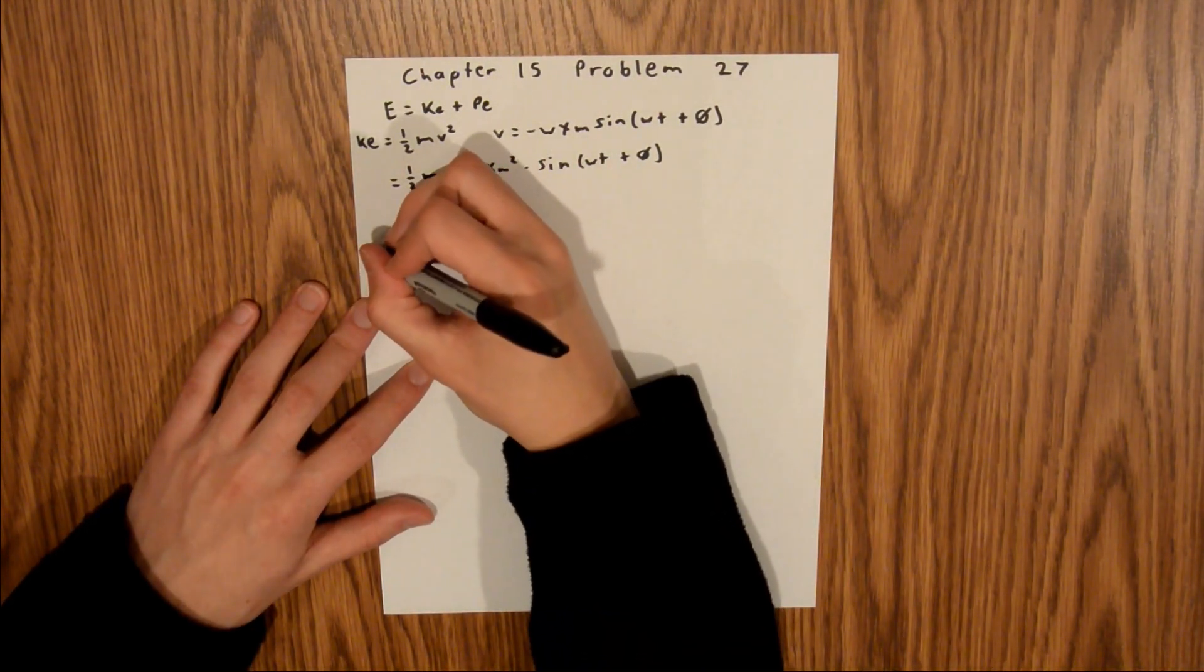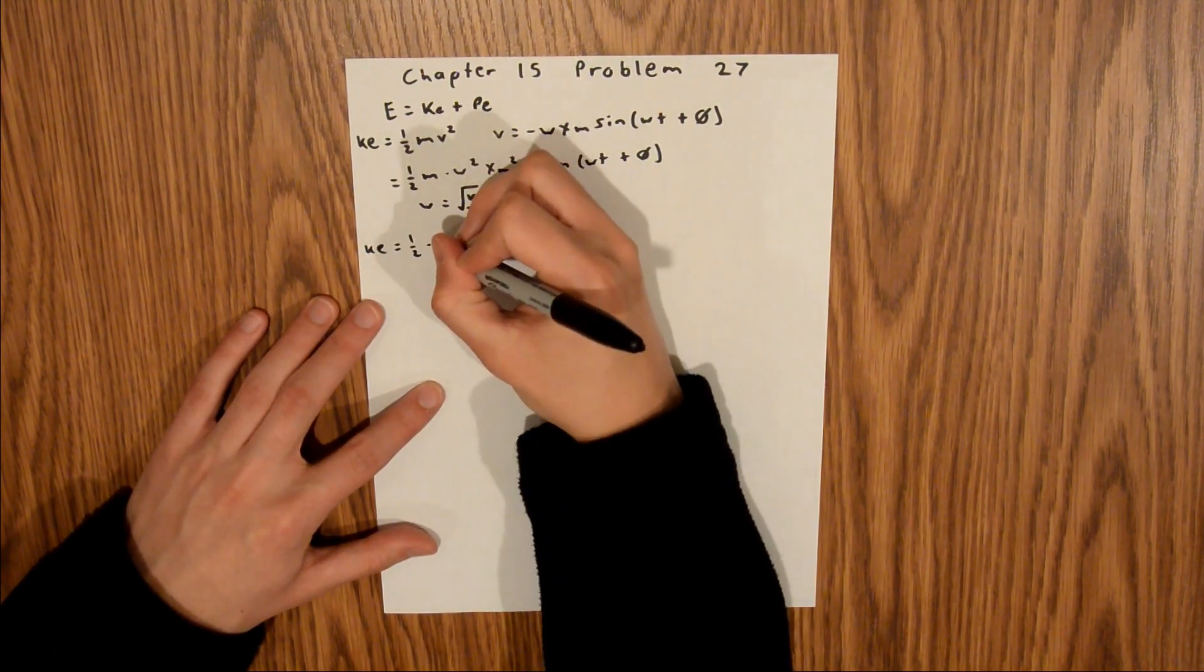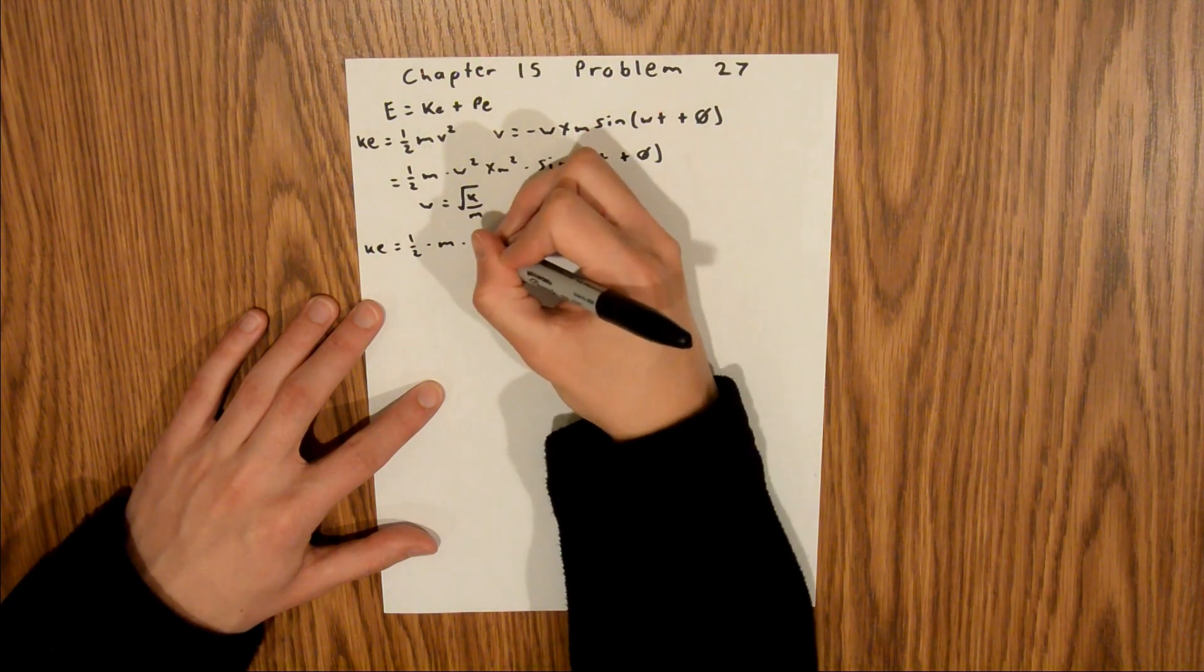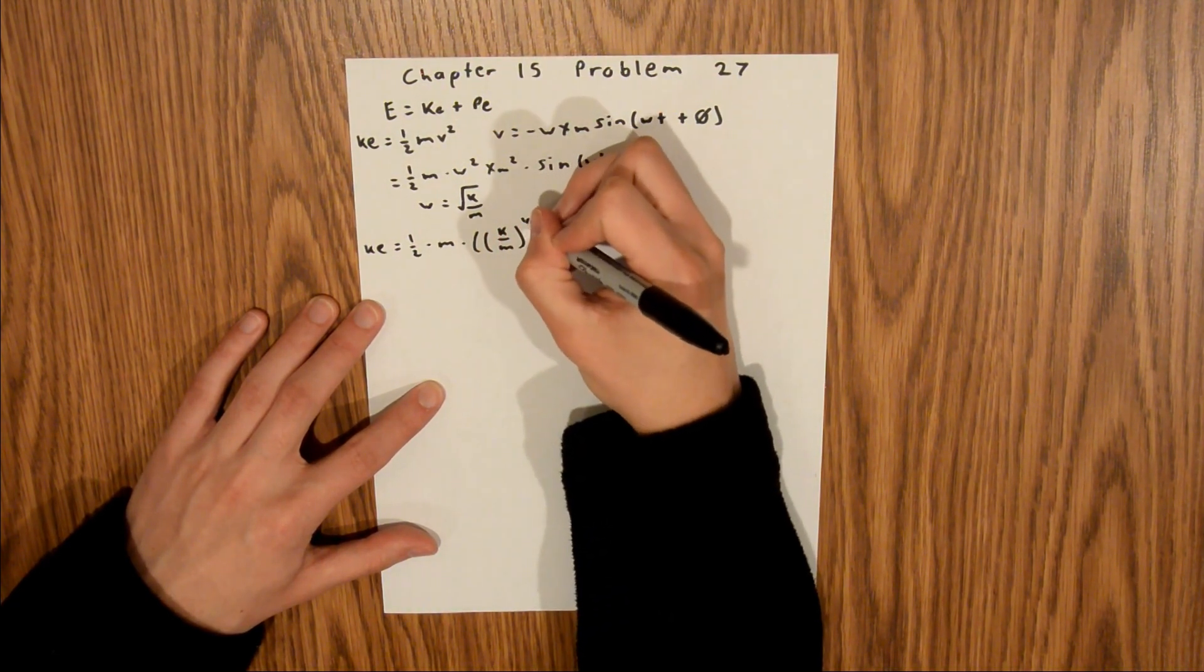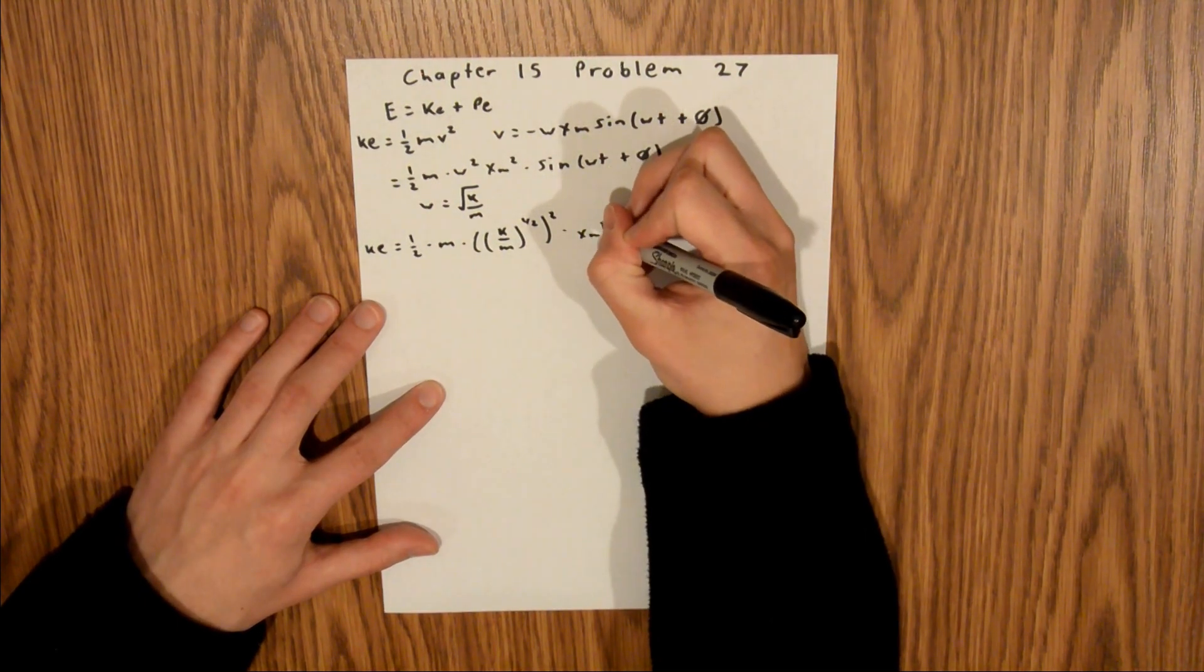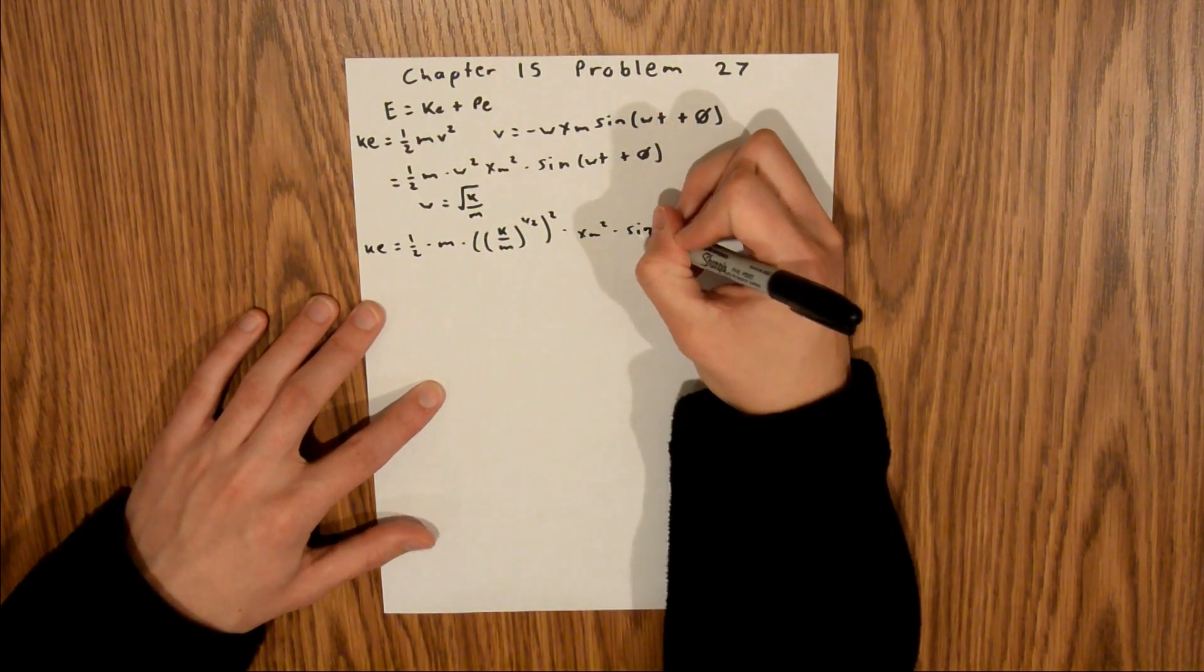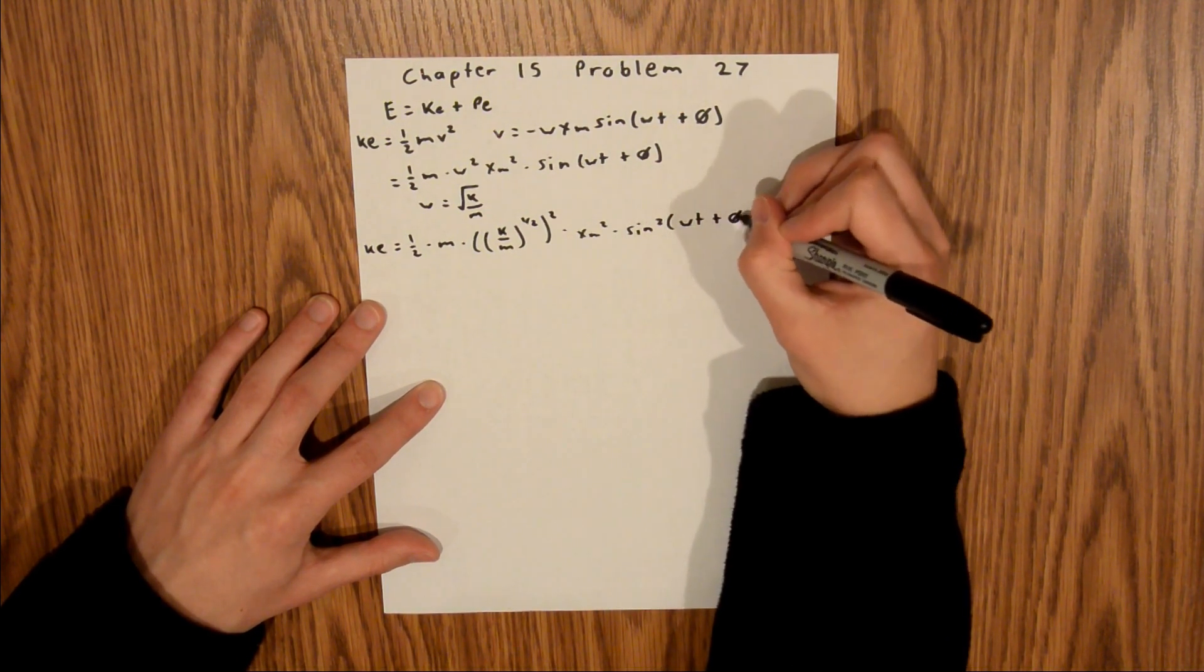And so we have KE is equal to 1 half times m times k over m to the 1 half squared times xm squared times sine of omega t plus phi squared.